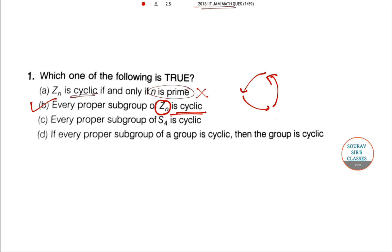But I'm still explaining. Every proper subgroup of S_4 is cyclic—no, proper subgroups of S_4 may be non-cyclic, so this is also wrong. And if every proper subgroup of a group is cyclic, then the group is also cyclic—no, this cannot be true. So option B is correct.